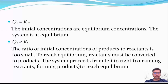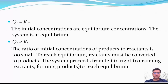If the reaction quotient Q is equal to the equilibrium constant K, then the system is at equilibrium. If Q is less than K, then the reactants must be converted to products and the system proceeds from left to right.